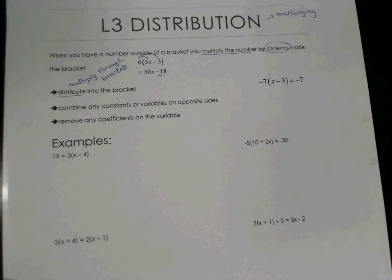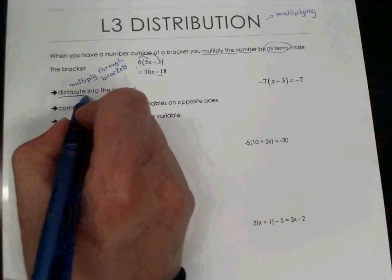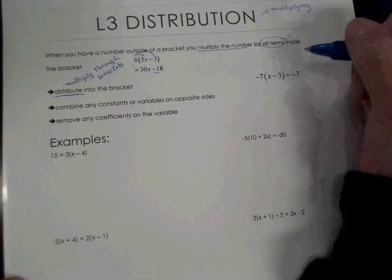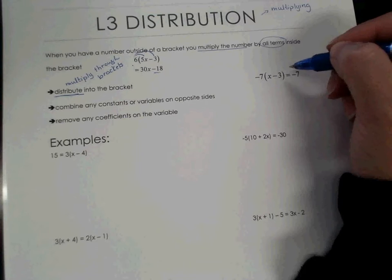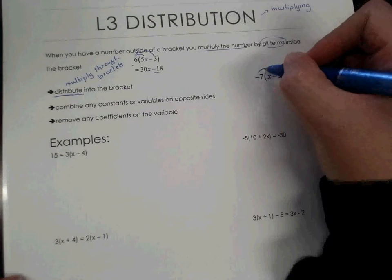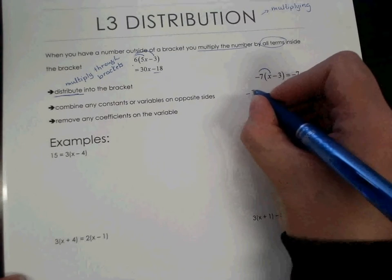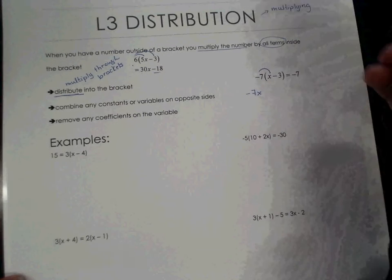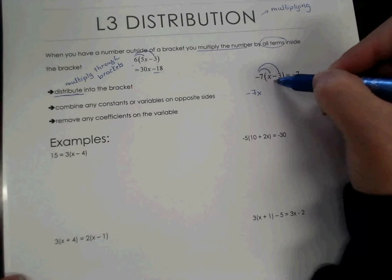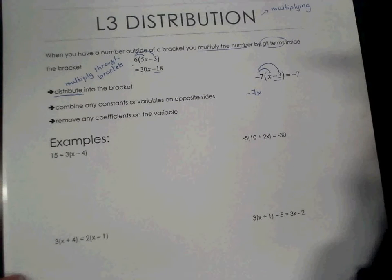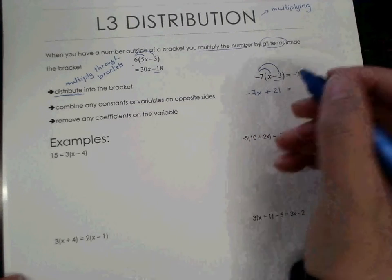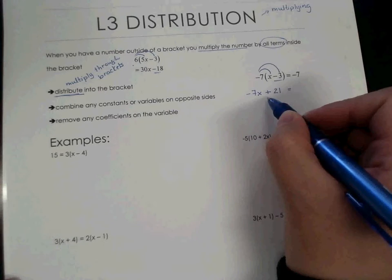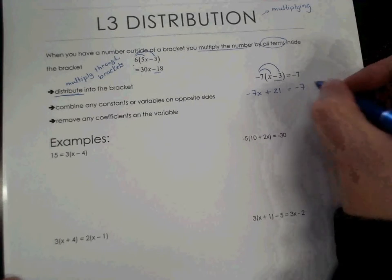The word distribute — we'll use this a lot — just means to take that coefficient and multiply it through the brackets. It could be a monomial. When I say distribute the negative seven, that means to multiply it through the brackets. So first I take my negative seven times x, which gives me negative 7x. Then I take negative seven times negative three — I treat it as a negative three even though it's a subtract — so negative seven times negative three gives me positive 21. That equals negative seven.